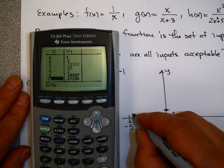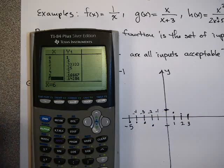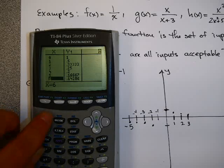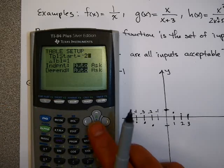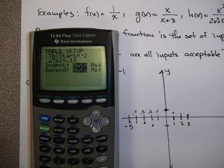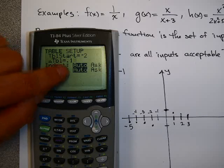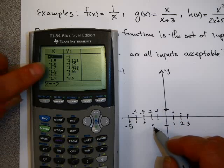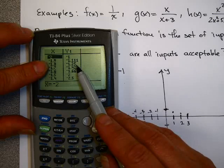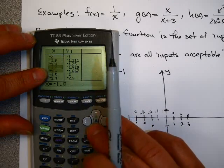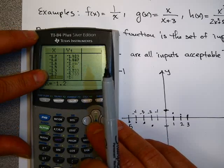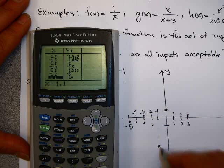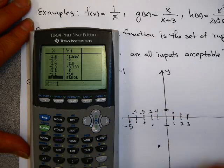I'd like to know what's going on as I get closer to negative 1. I'll go back to table set, start at negative 2, and count by 0.1. Notice that as x goes from negative 1.9 down toward negative 1.1, the y values are getting more and more negative — all the way down to negative 10 at x equals negative 1.1. And at negative 1, we get an error again.